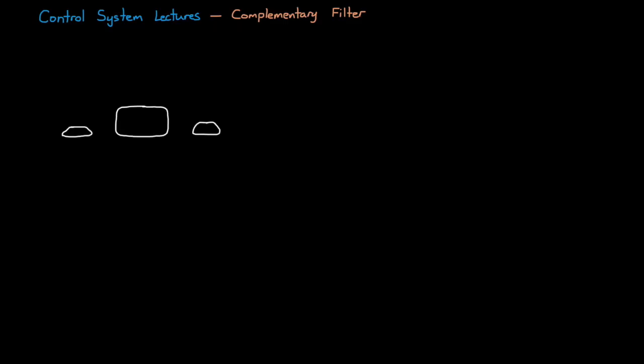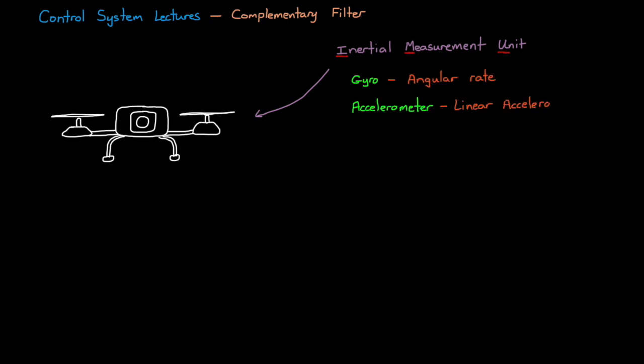To understand how a complementary filter works and the situations where it's useful, we should set up a problem. Let's imagine we have a drone and we're trying to estimate the roll angle using its onboard inertial measurement unit, or IMU. The IMU has both a gyro that senses angular rate and an accelerometer that senses linear acceleration.